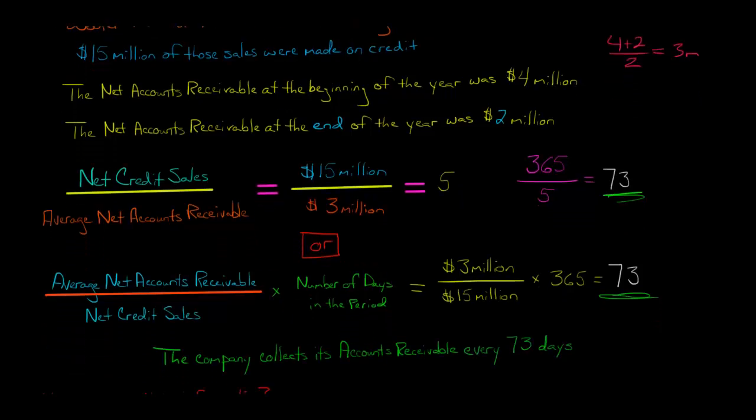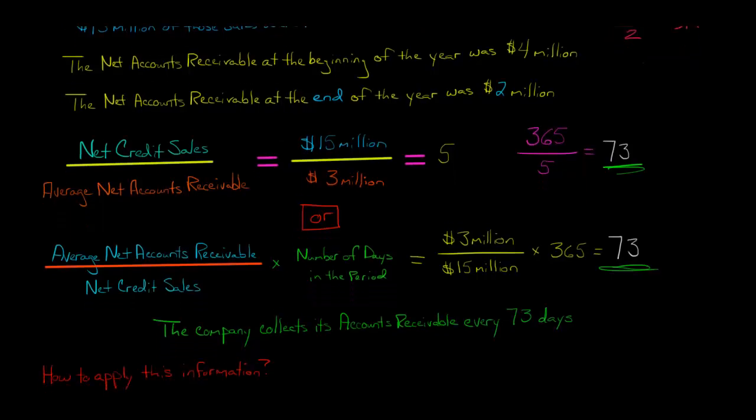That means it takes this company, Woofer, 73 days on average. When it makes a credit sale, it would be 73 days before it collects that credit sale and actually receives the cash.